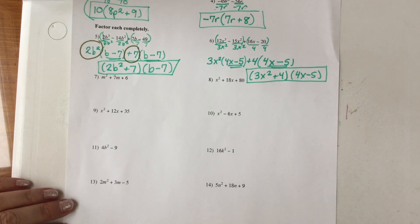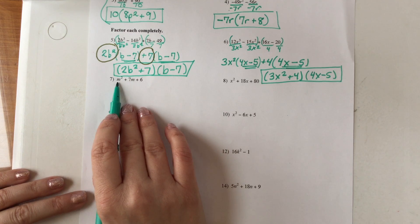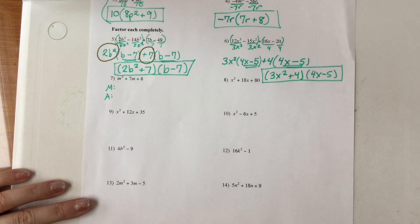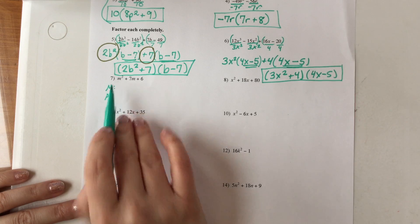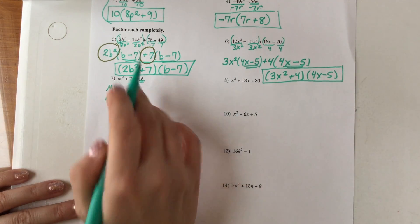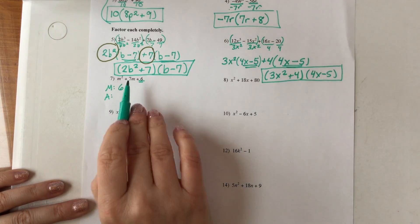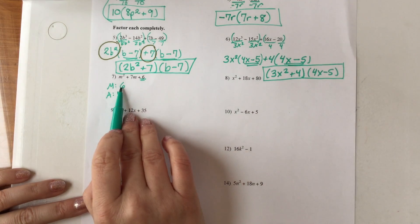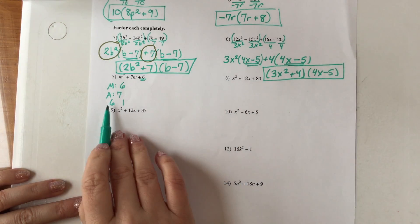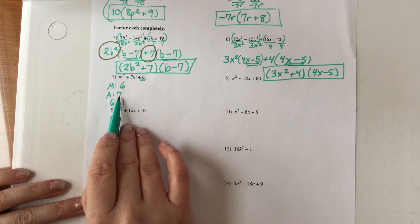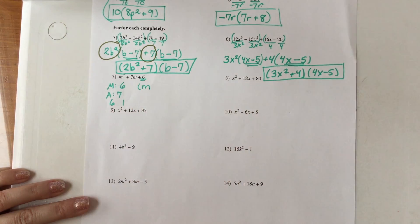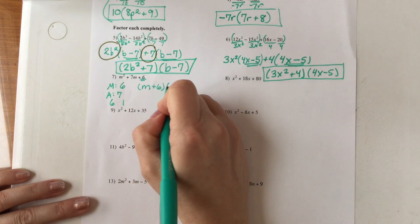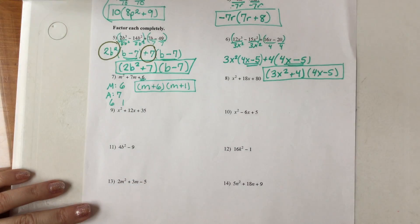If you are factoring something that has three terms and there is not a number in front, you use what I call the multiply-add method. You need to find two numbers that multiply to the last term — here it's positive 6 — and the same two numbers have to add to the middle term, which is positive 7. Two numbers that multiply to 6 and add to 7 are 6 and 1. So the factored form using variable M is (M + 6)(M + 1).